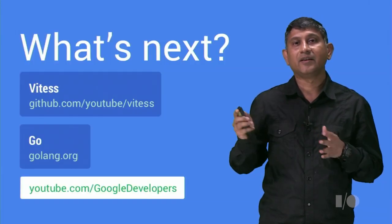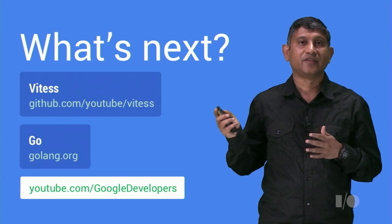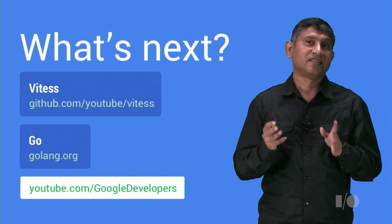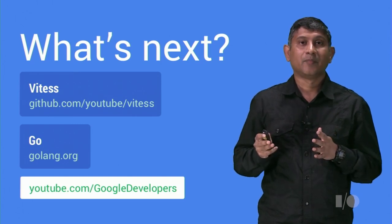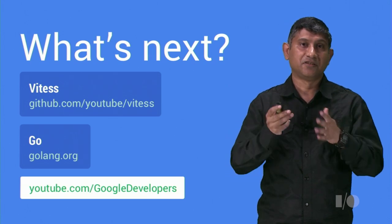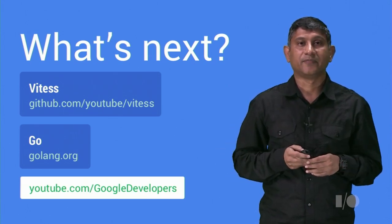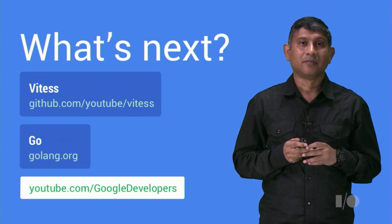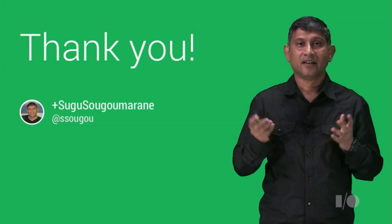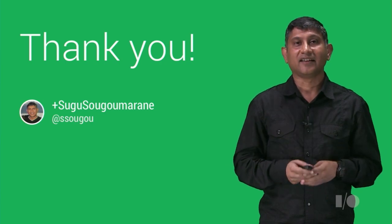So this is a very brief presentation of Vitess and Go. If you want more information, you can follow the links provided here. Vitess is still under active development, but most of its core features are done. The project is open sourced, and you should be able to download it and give it a try. We are behind on documentation, but you can always contact us if you need help, and we are very eager. Thank you for listening, and happy hacking.